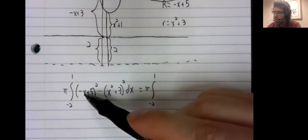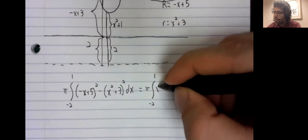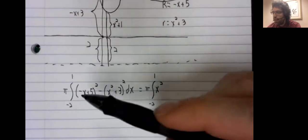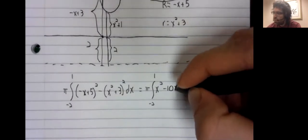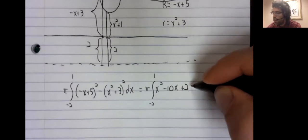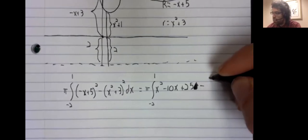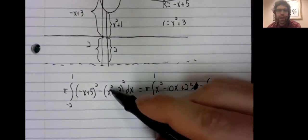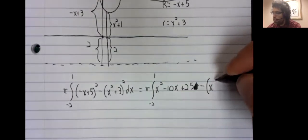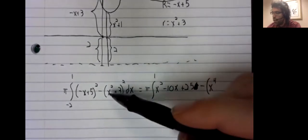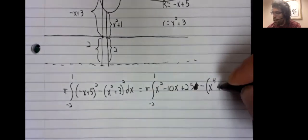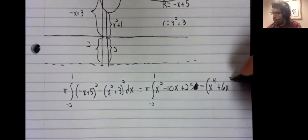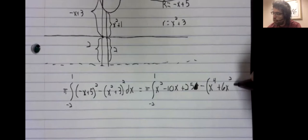Let's see. Negative x plus five squared is x squared minus five x minus five x plus five squared. Minus x squared plus three squared is x to the fourth, x squared times three. There will be another x squared times three. Three squared is nine.